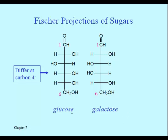Glucose on the left is not an enantiomer of galactose — they are stereoisomers, but they're not mirror images of each other. You can pick out parts of the molecule where they appear to be mirror images, but other parts where they are not, and that leads us to the topic of diastereomers. The point of this slide is to show that the distinction between what makes glucose and galactose different is easy to see if we use Fischer projections.